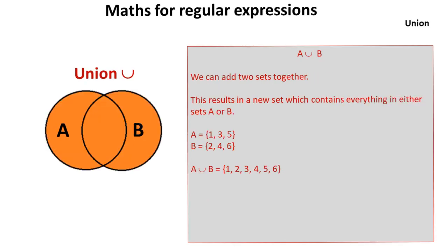Next one to look at is union. So we can effectively add two sets together. This results in a brand new set which contains everything in either set A or B. So here we have set A and B, and the union of A and B creates a new set which contains all the items from sets A and B.